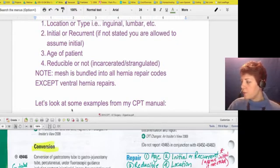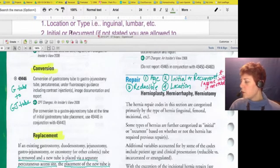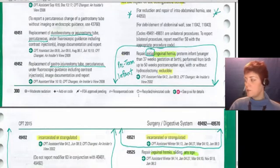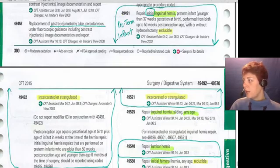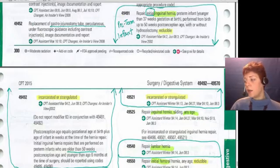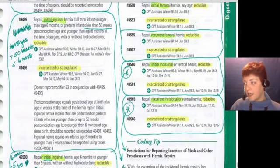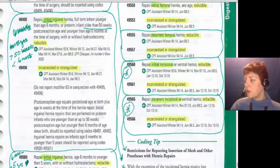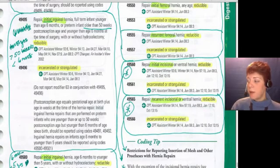Let's look at examples in my manual. I group parent codes together. Code 49491 is the very first hernia code, going down to 49492. These are initial inguinal hernias — so that's the location. Within that bubble, the difference is reducible versus incarcerated: 49491 is reducible initial inguinal, and 49492 is the incarcerated one. The next bubble is 49495 — still initial inguinal, but now age matters: this is older than 50 weeks post-conception but less than six months. Within that bubble, again it's reducible versus not.